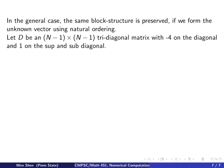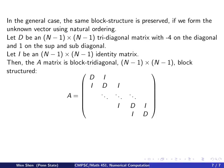In detail, let D be an (N-1) × (N-1) tridiagonal matrix with negative 4 on the diagonal and 1 on the super and sub diagonal. And let I be an identity matrix of size (N-1) × (N-1).